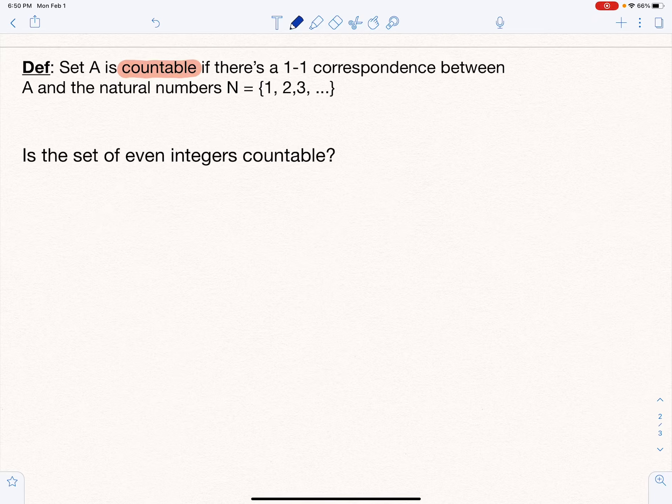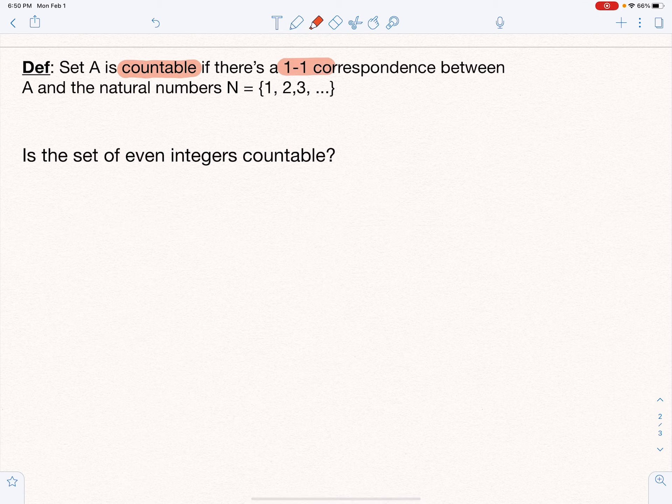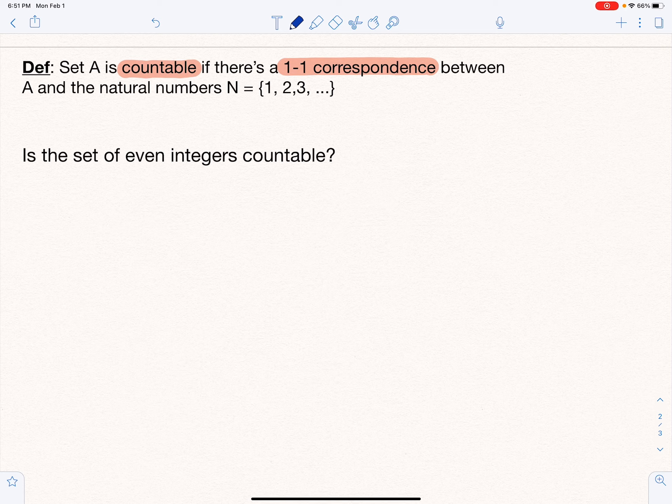All right, so we have a set is countable if there is what's called a one-to-one correspondence between A, the set, and the natural numbers N = {1, 2, 3, ...}. That just means that we can list out the elements of set A. Just because a set is infinite doesn't mean it's not countable.